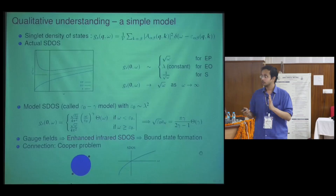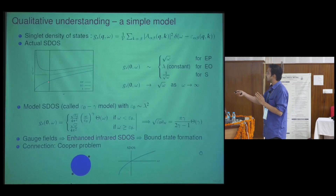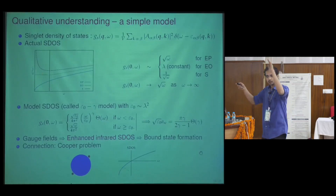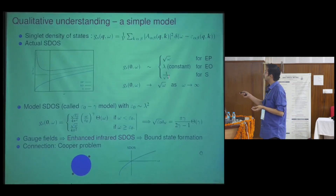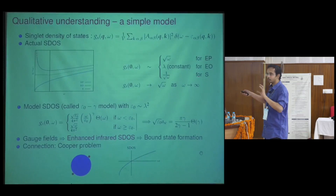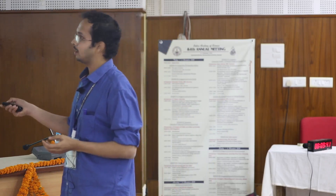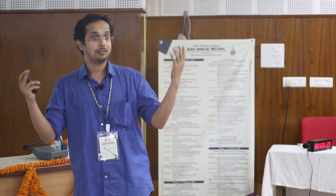In three dimensions the density of states goes as the square root of energy, whereas in two and one dimensions it is constant or one over root energy. In the presence of gauge fields, the infrared singlet density of states is modified, and that is the main advantage in amplifying the attraction. This is very similar to what Cooper showed in BCS theory.